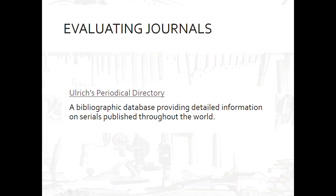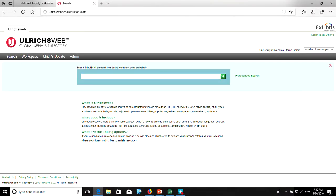I mentioned Ulrich's Periodical Directory — here's a description of it, and now we're going to actually go there to evaluate the Journal of Genetic Counseling. Here's Ulrich's — there's a live link from the PowerPoint so you can get directly to it. We do have access to it through UAB. If you're off campus, you log in with your Blazer ID and password.